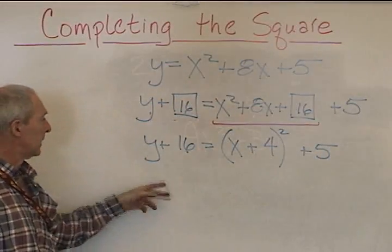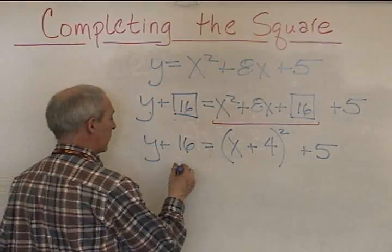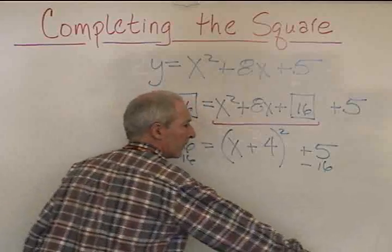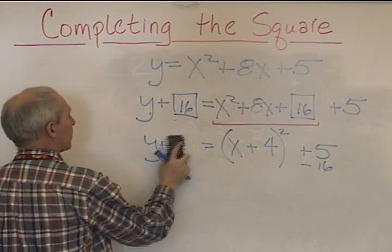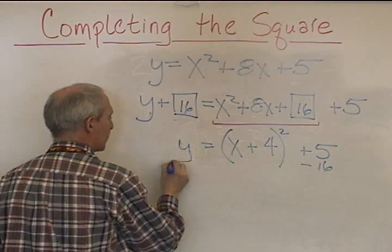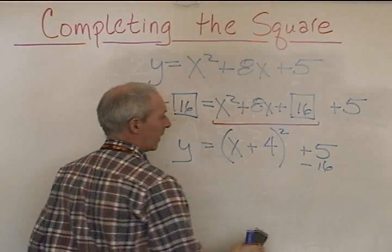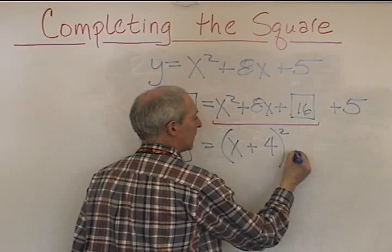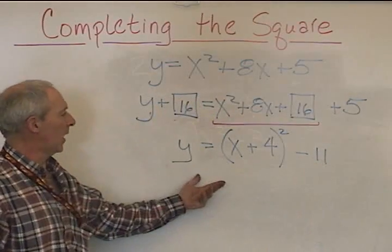The next step is to get y by itself. So we will subtract 16 from both sides. And this side gives us the y by itself. So we get y is equal to x plus 4 quantity all squared. This becomes negative 11. And we're done.